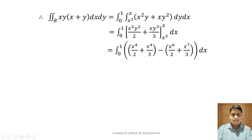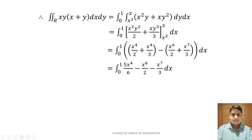Replacing y by upper limit x: integration from 0 to 1 of [x² · x²/2 + x³ · x/3] minus lower limit y = x²: [x² · x⁴/2 + x · x⁶/3] dx. Next step: integration from 0 to 1 of x⁴/2 + x⁴/3, taking the LCM. After simplification we get 5x⁴/6, minus x⁶/2 minus x⁷/3, dx.